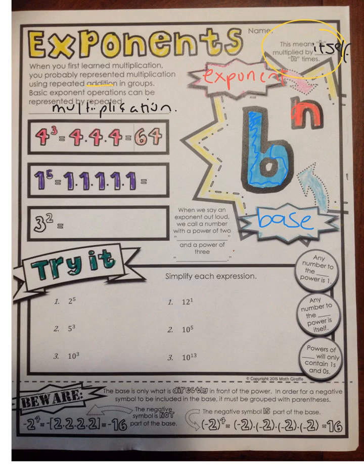When we say an exponent out loud, we call a number with a power of 2 'squared,' and a power of 3 'cubed.' So this first example, 4 to the third power is 4 cubed. And down here, this 3 to the second power is 3 squared.